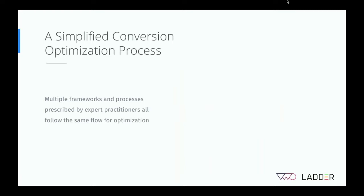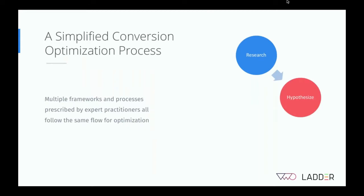While A/B testing as a tool is very effective to help you increase your conversion rates, it's just one step in the entire conversion optimization process. If you look at multiple frameworks prescribed by expert practitioners, you'll notice all of them could be aggregated into four simple steps. The first step is research — essentially trying to understand your visitor behavior. The second step is, once you have a good understanding of visitor behavior and have synthesized your observations, you hypothesize what problems or ideas you can test.